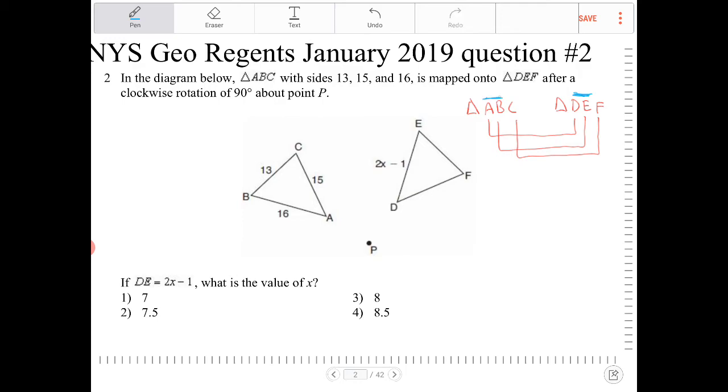It would correspond with AB, right? So if that's the case, then I can say 2x minus 1 is equal to 16.